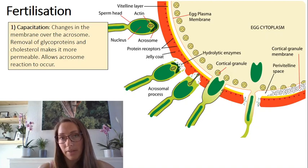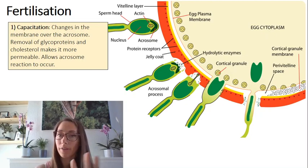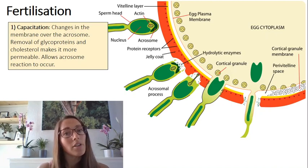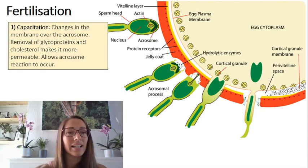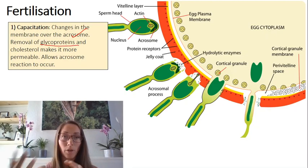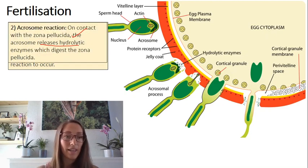Let's look at what happens when the spermatozoa actually meets the secondary oocyte. There are four key stages and I'll run through them briefly here before you watch more detailed videos. Capacitation is the first stage — this is where we get changes in the membrane of the acrosome: glycoproteins are removed, making the membrane more fluid and more permeable, which then allows for the acrosome reaction.